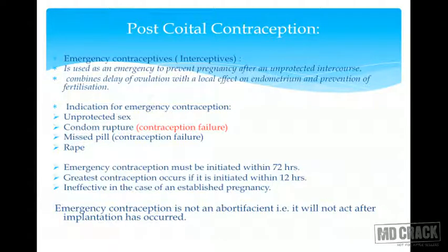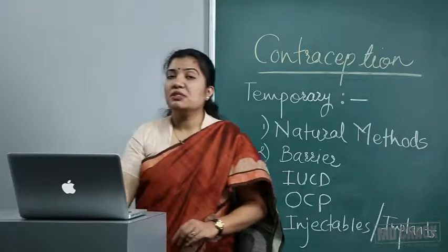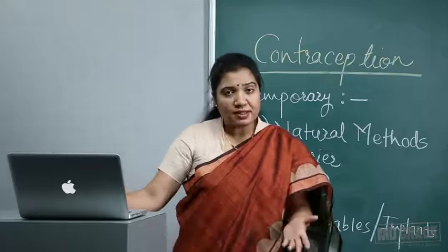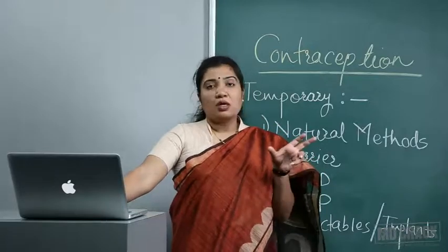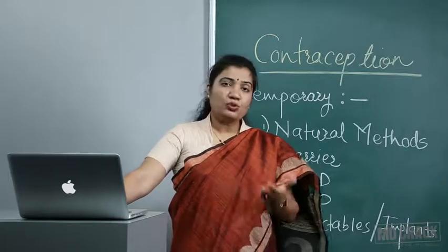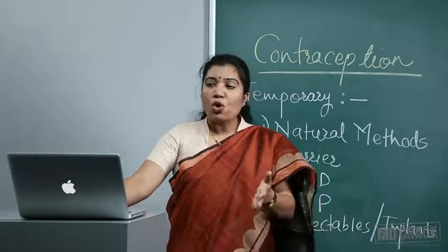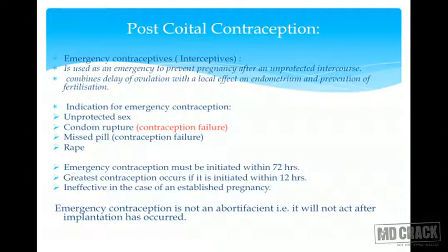Emergency contraception combines delay of ovulation with a local effect on the endometrium and prevention of fertilization. Indications include unprotected sex, condom rupture, missed oral contraceptive pills for two or more days, and sexual assault. If a patient misses pills for two or more days, the pack does not provide complete protection and she should use post-coital contraception.